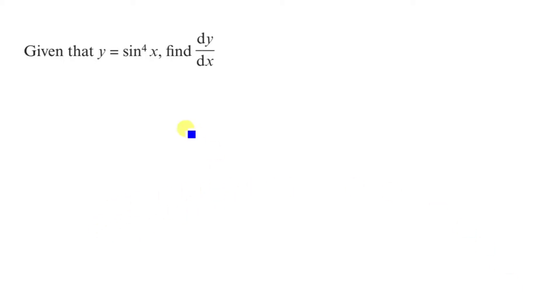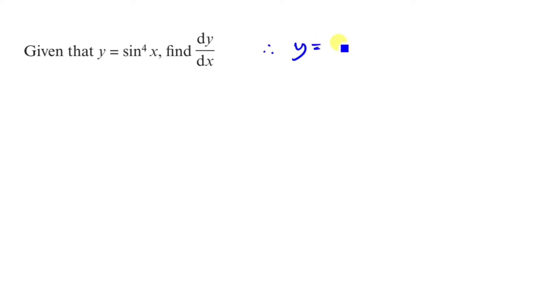In this example we want to differentiate y equals sin x all to the power of 4. The first thing you always want to do for a trig problem is to rewrite it as y equals open bracket sin x, all to the power of 4, because this makes it look way easier.